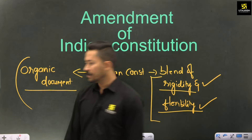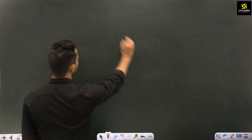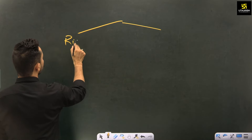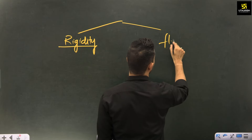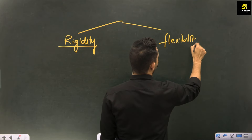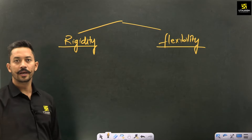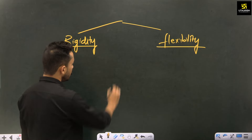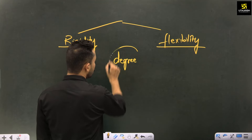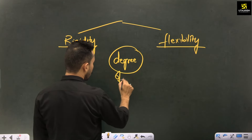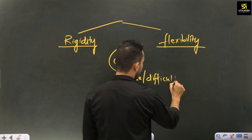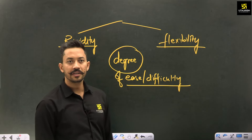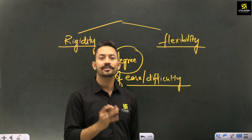When you read about the features of the Indian constitution, you say that it has a good blend of rigidity and flexibility. What does this mean? It means that within our Indian constitution, a degree has been created — a degree of ease and a degree of difficulty — through which we can bring changes in the constitution.